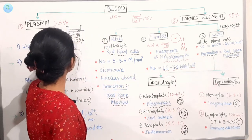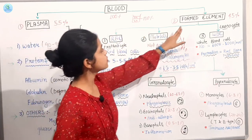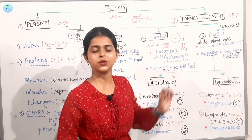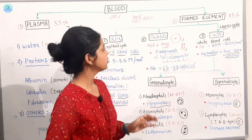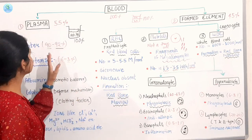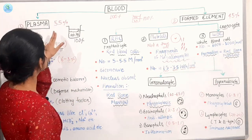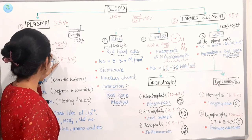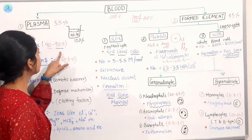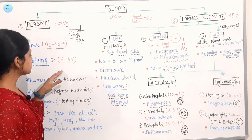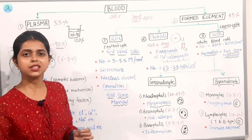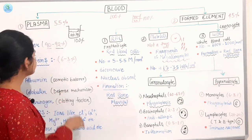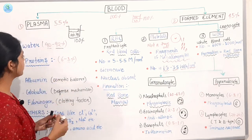The first is our plasma, which is 55%. The second is our formed element, which is 45%. First of all, we will talk about plasma. Plasma is 55%. You will see how much water is in your body. It will be 92%. The proteins are present in your body, 6-8%. Now let's talk about which proteins will be.